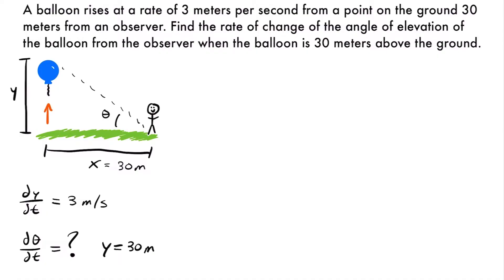That's everything we know about this problem. Before forming an equation, a few notes: our x value is not going to change throughout this problem. The balloon is only moving in the y direction — not left or right — so it will always be 30 meters from the observer horizontally. However, the height y is changing. So we have x as a constant and y as a changing variable with a known rate dy/dt. The angle theta is also changing, and that's what we want to keep in mind as we form our equation relating x, theta, and y.